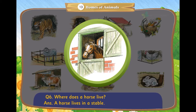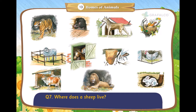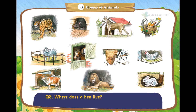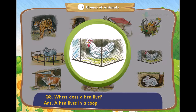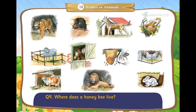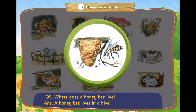in a stable. Where does a sheep live? A sheep lives in a pen. Where does a hen live? A hen lives in a coop. Where does a honeybee live? A honeybee lives in a hive.